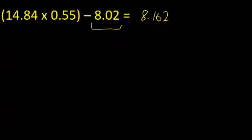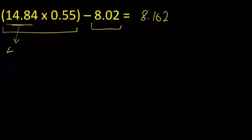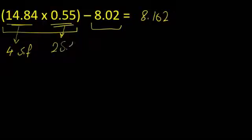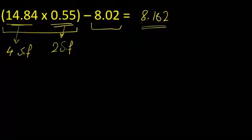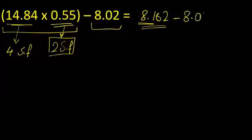This next example has a multiplication part and a subtraction part. For the multiplication, the answer should follow the least number of significant figures. Let's count: 14.84 has four significant figures, and 0.55 has a leading zero which we don't count, so that's two significant figures. If we do the multiplication we get 8.612 — the answer should have two significant figures, so we consider 8.1. We include the full value 8.162 minus 8.02 in the calculation.